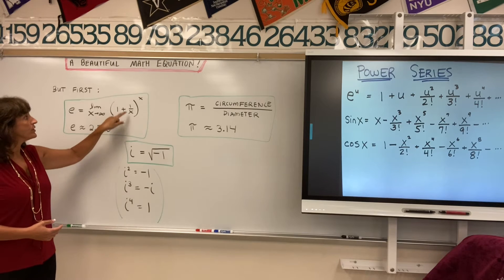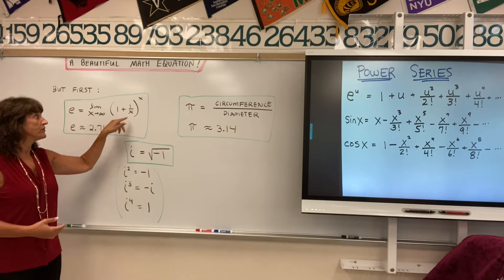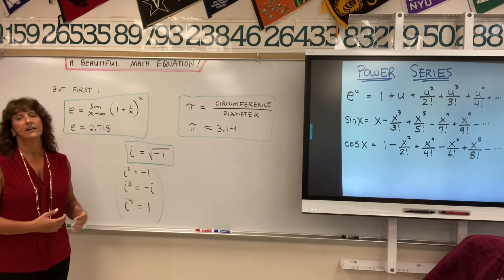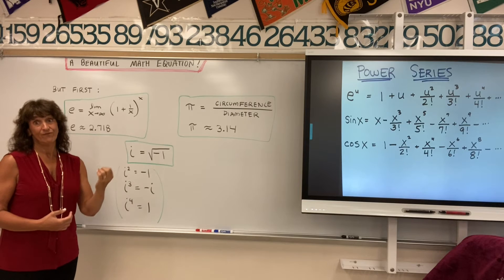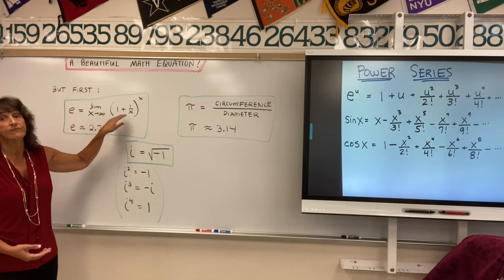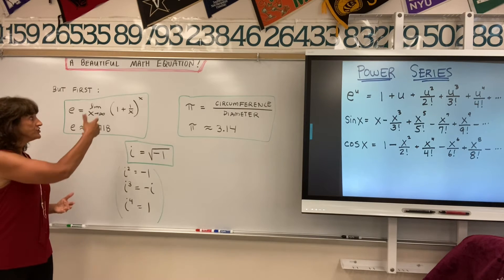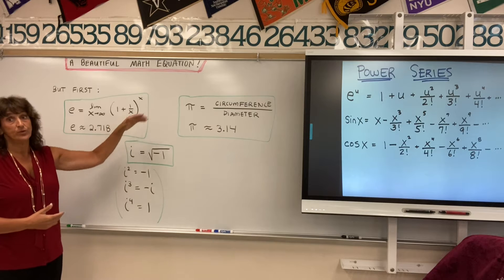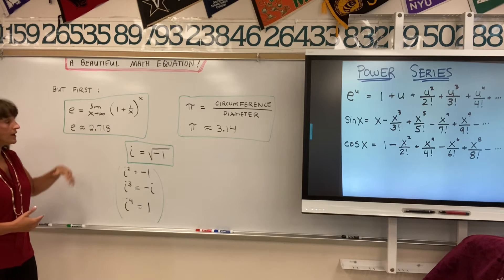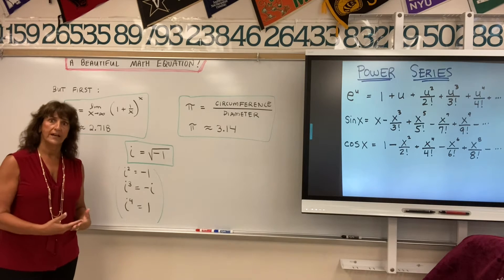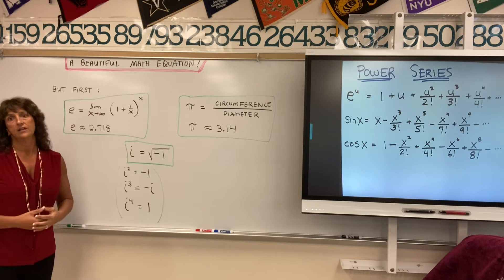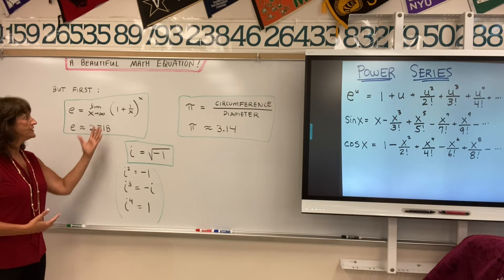When you plug in 2, you get 1 plus 1 over 2, so 1 plus one-half. 1 plus one-half is three-halves. When you take three-halves and square it, you get nine-fourths, which is 2.25. As you plug in larger numbers for X going to infinity, this number is approaching 2.718 — an important number when talking about the base of natural logs, exponential growth and decay. So this is a very important constant you've probably learned in an algebra class.